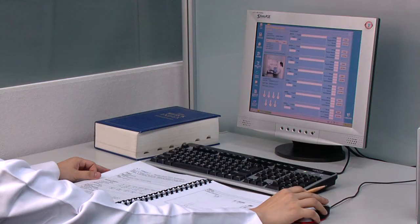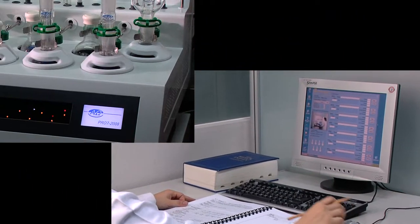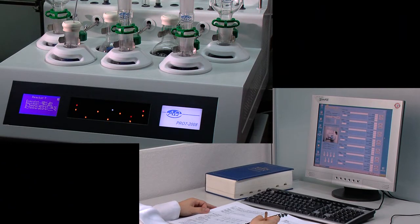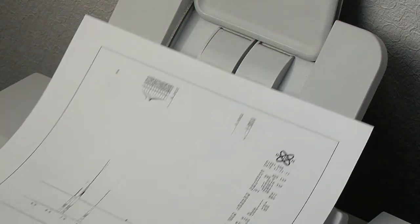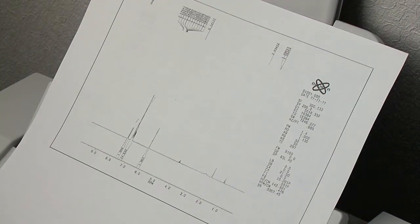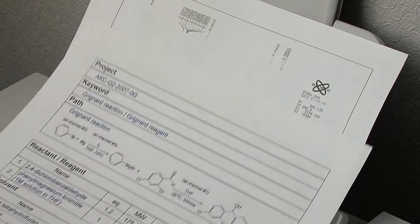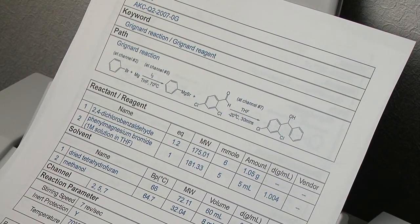The computer connection also allows chemists to free themselves from the bench and remotely monitor the ongoing reactions. Once the reaction is completed, Pro7 PIN generates a digital lab notebook, making it extremely easy to track, store and retrieve the experiment data.